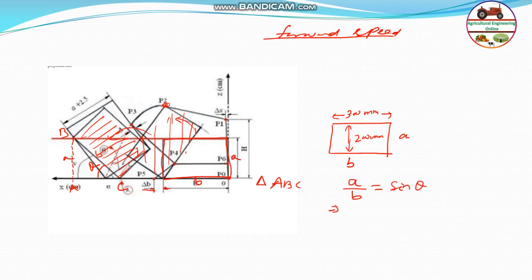So theta will be equal to sin inverse 200 by 300. That will be equal to theta is 41.81 degree, which will be equal to 42 degree.